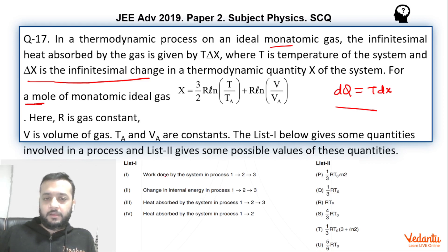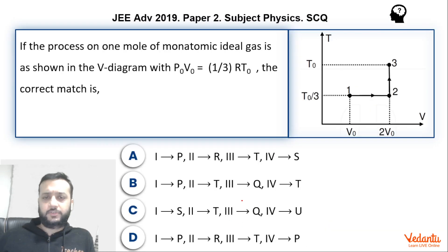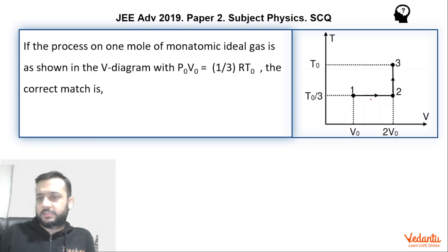Work done we have to find. Change in the internal energy we have to find. Heat absorbed by the system. And you know, these things. Very easy question. So this is the graph. Now if you see the process 1, 2 is isothermal. Temperature is constant. This is a TV graph. And process 2, 3 is isochoric because volume is constant.